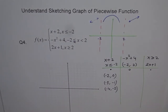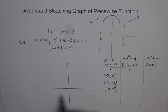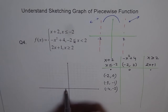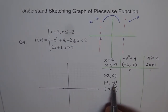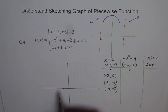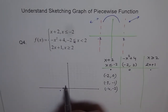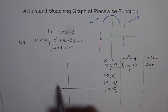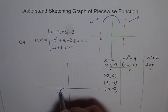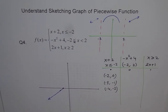Let's draw that straight line. At minus 2 we get 0, and this point is filled in. At minus 3 we get minus 1 — that's a positive slope. The slope is 1, so we can get all the points from there and join them. That is the line x plus 2 on the left side of minus 2, including minus 2.